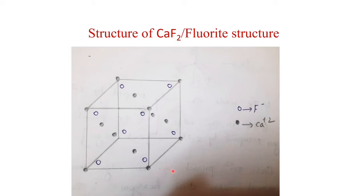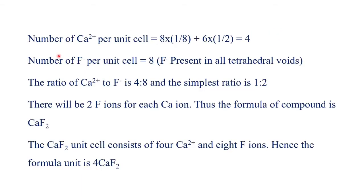Now let us determine the number of Ca²⁺ ions per unit cell. Since Ca²⁺ has a CCP arrangement, ions are present at all corners and face centers. Each corner atom is shared with 8 other cubes, contributing 1/8. Each face-center atom is shared with 2 cubes, contributing 1/2. So: 8×(1/8) + 6×(1/2) = 1 + 3 = 4 calcium ions per unit cell.